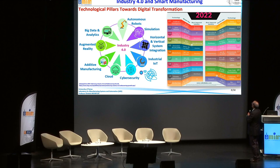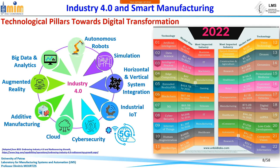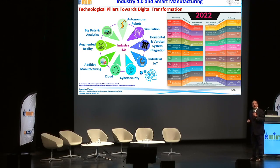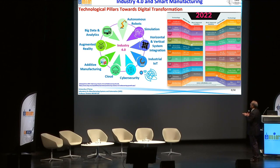Some technology pillars at the center of this digital transformation: big data analytics, autonomous robots, simulation and digital twins — which are advanced, adaptive simulation models — cybersecurity and communication issues supported very much by 5G and sixth-generation Wi-Fi networks. Augmented reality will support this transition, and of course horizontal and vertical system integration.